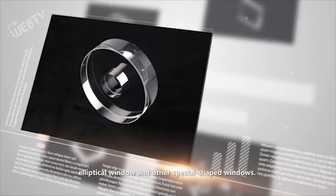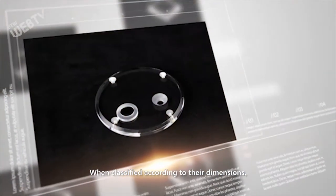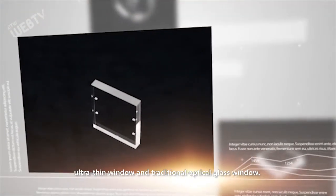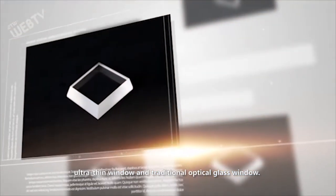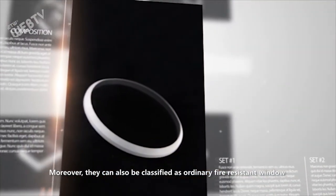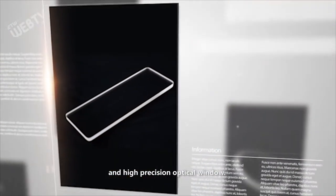When classified according to their dimensions, our products are divided into large dimension window, ultra-thin window, and traditional optical glass window. Moreover, they can also be classified as ordinary fire resistant window and high precision optical window.